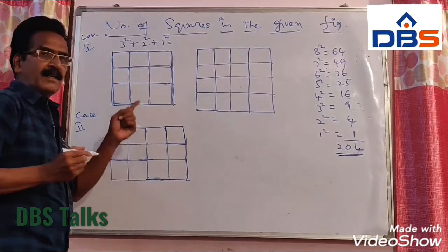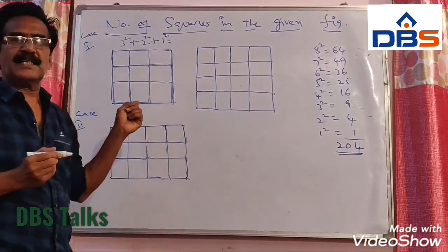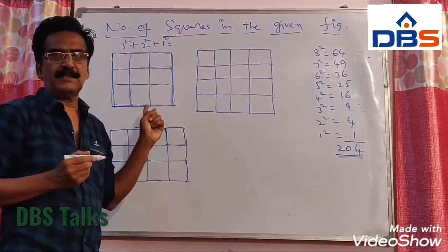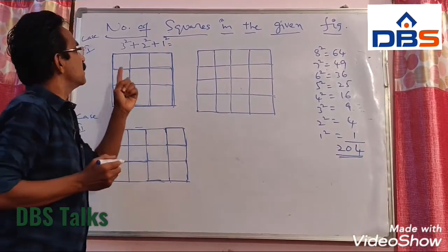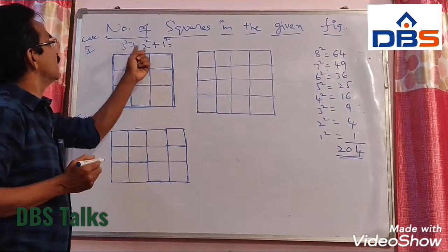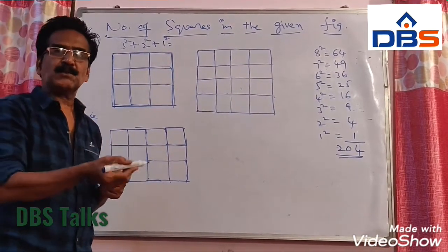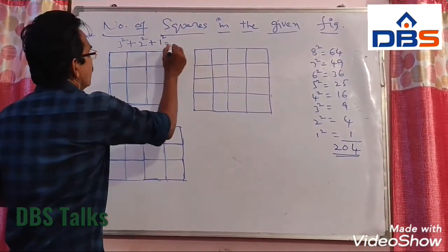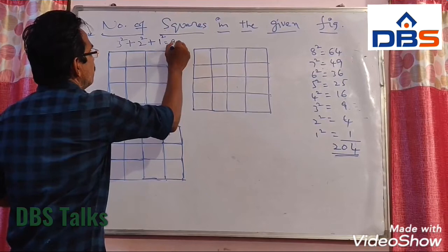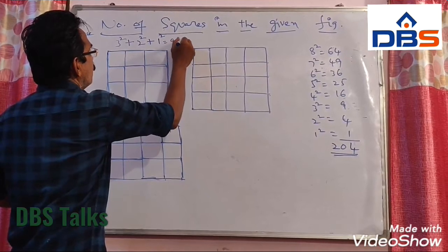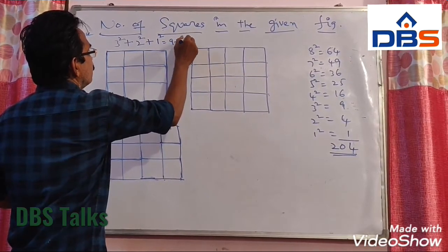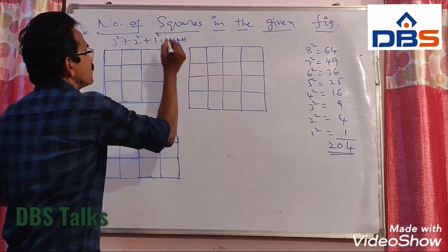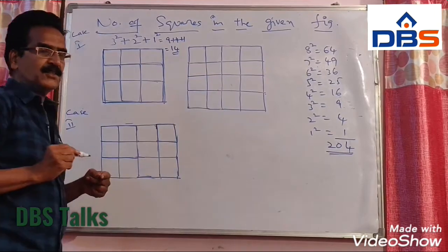So here there are 3 rows and 3 columns. Then 3 squared plus 2 squared plus 1 squared is 9 plus 4 plus 1, that is equal to 14 squares.